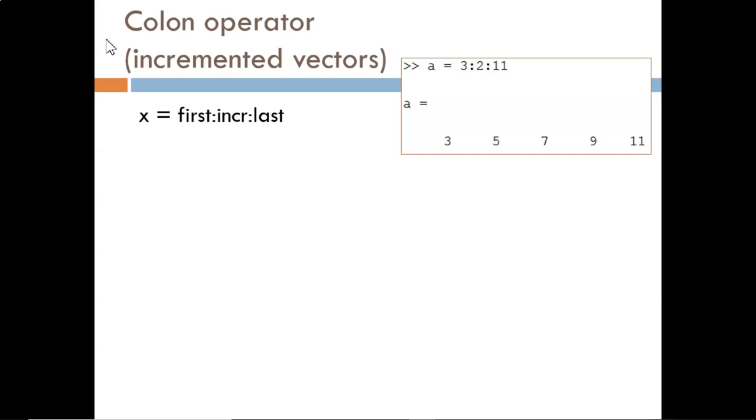The last operator we'll explore in this video is the colon operator, used for making incremented vectors. We will use this quite often, since it is useful to have a list of numbers all spaced by a regular step size. The general format is shown here.